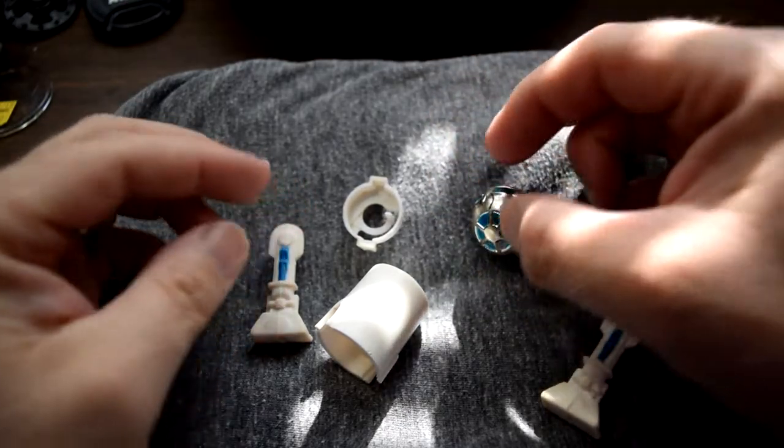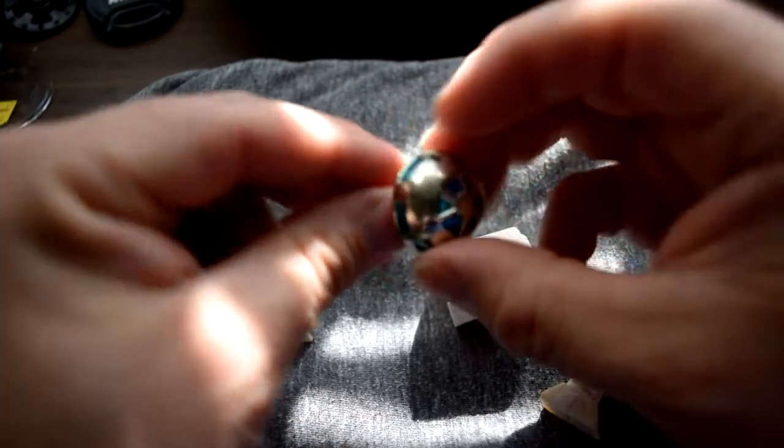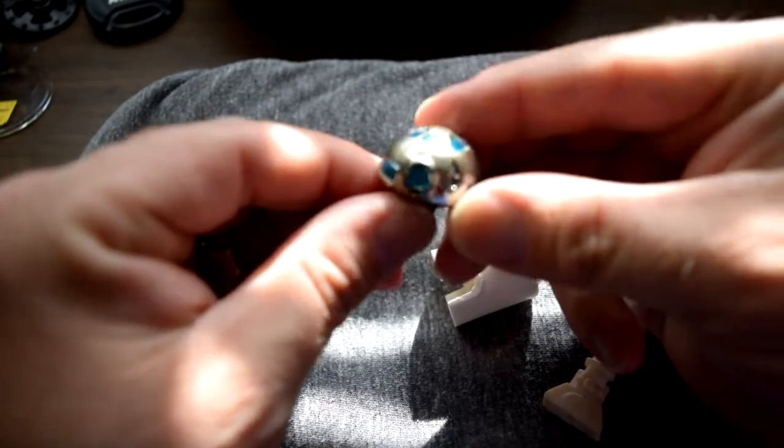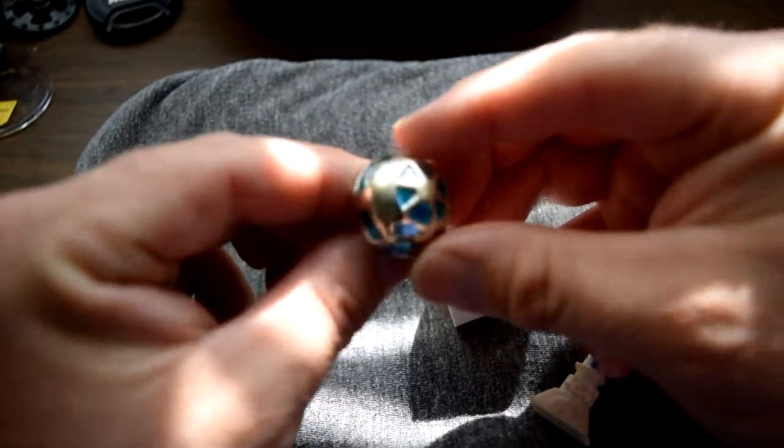Alright, these are the two R2-D2s. This is the first one, the '78 version without sensor scope. Like I said, I'm not going to do anything to these domes. We're going to put a sticker on here and I'm going to show you the process on putting it back together.